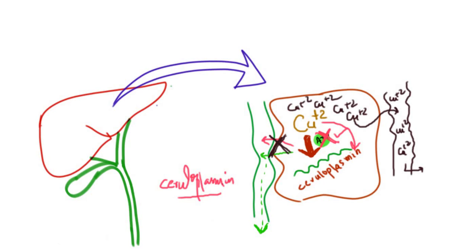To summarize: normally, copper was being attached to ceruloplasmin and the copper-ceruloplasmin complex was thrown into bile, excreting the copper. In Wilson's disease, this complex is not formed because the protein responsible for incorporating copper into ceruloplasmin is absent. So free copper accumulates within the hepatocyte and leaks into the blood vessels, increasing free copper in the blood.